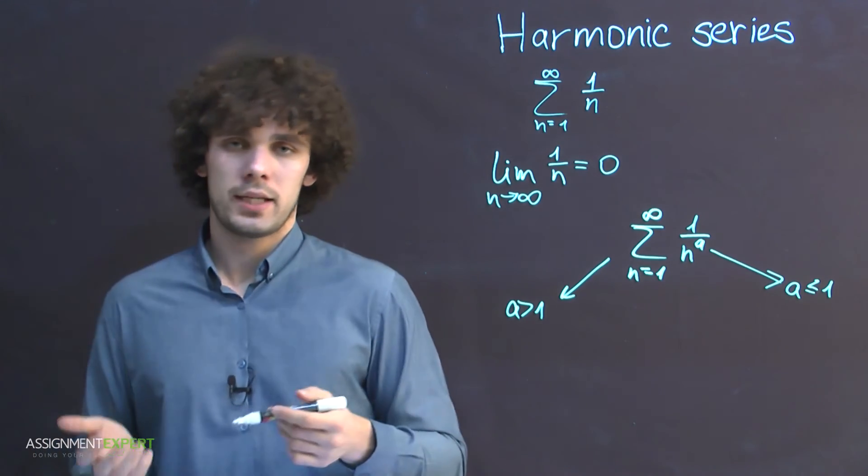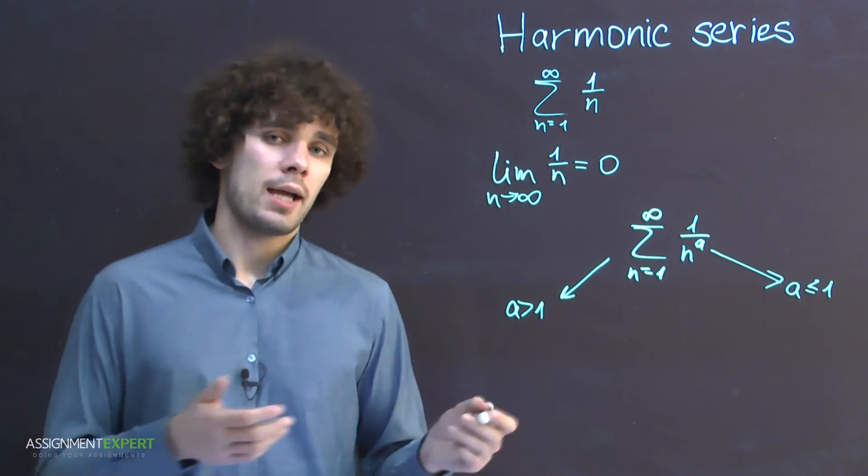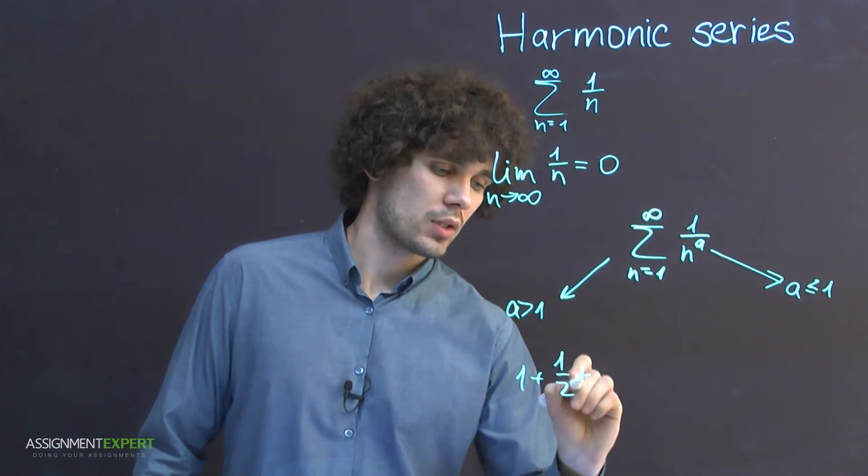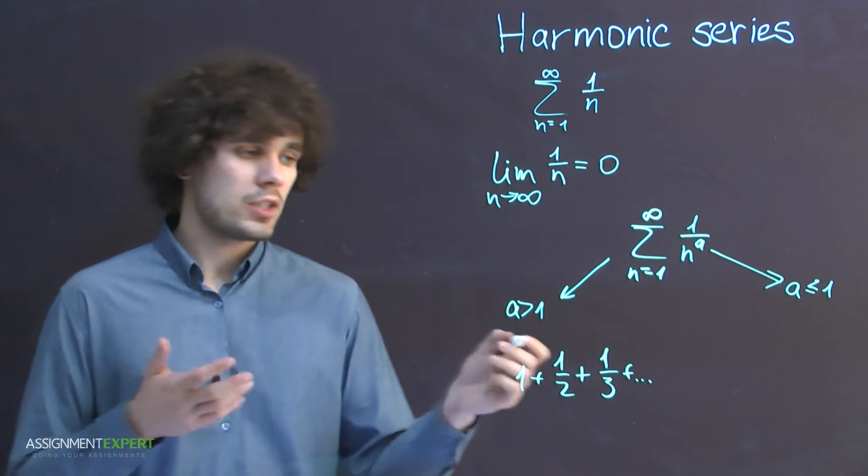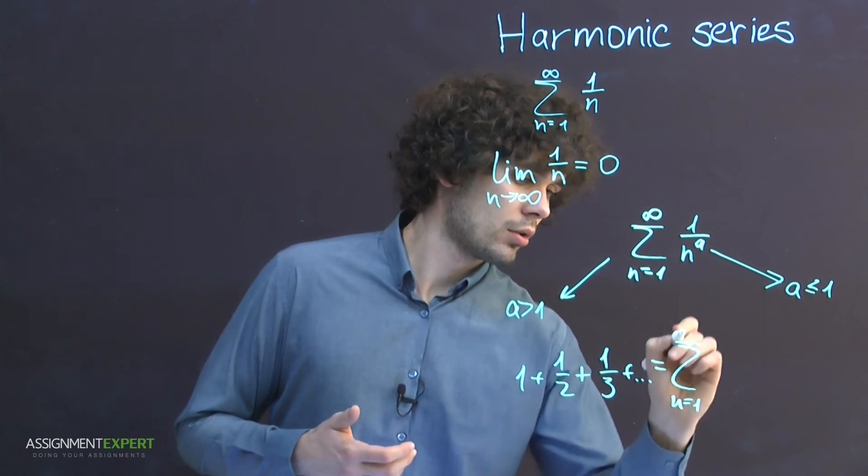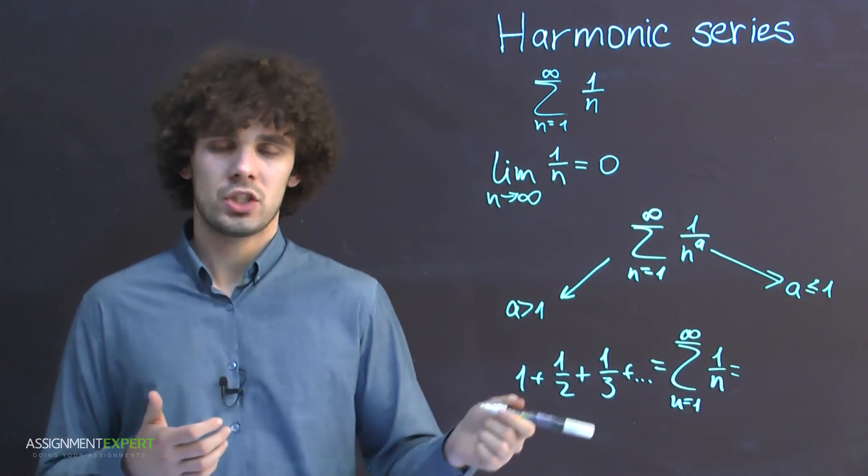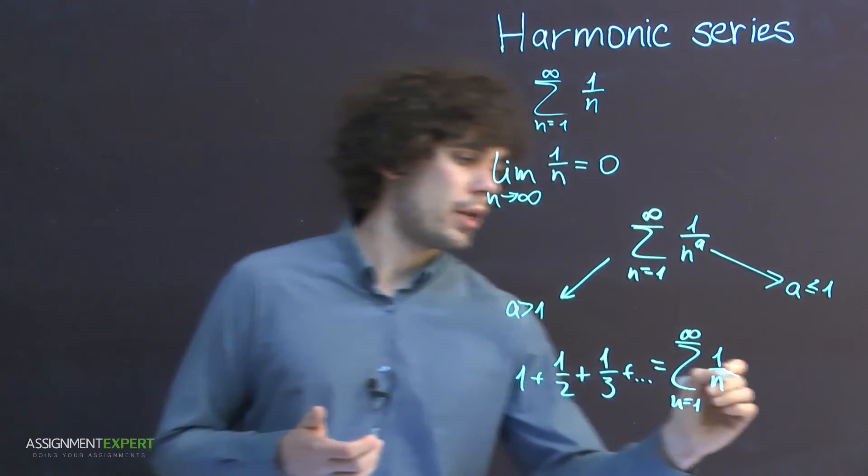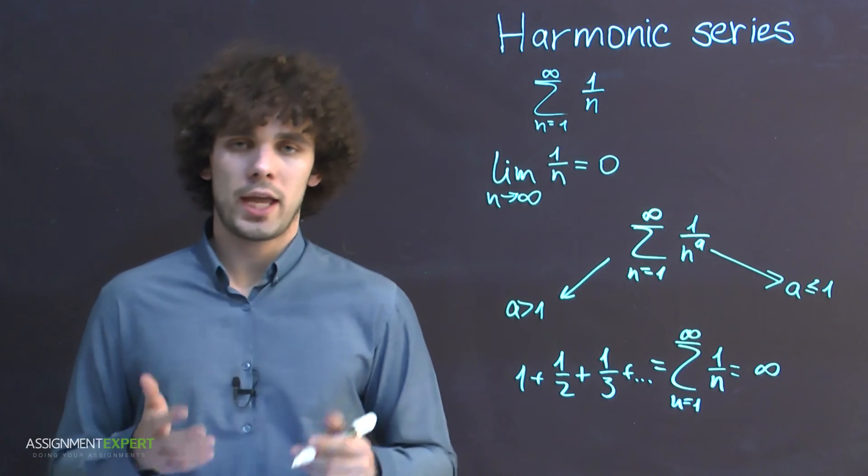Now let's return to the bar problem. We can consider beer portions as series: 1 plus 1/2 plus 1/3, and so on. We know that it's a harmonic series. And also we know that this series diverges. Therefore, the sum of all the terms is equal to infinity. Which explains why Bartender was so angry.